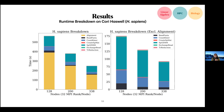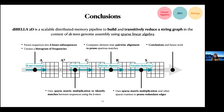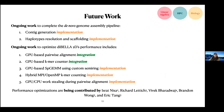Today I presented BELLA 2D, a distributed memory pipeline to build and transitively reduce a string graph for de novo genome assembly using sparse matrix computation. Among our future works, we have the completion of the de novo genome assembly pipeline. The steps currently being worked on include consensus generation, haplotype resolution, and scaffolding to obtain a chromosome-scale assembler. We also have ongoing work to optimize performance, including GPU integration of pairwise alignment, k-mer counting, and sparse matrix multiplication.